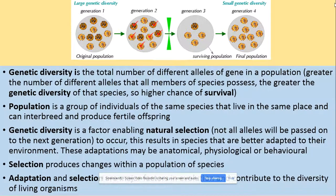Population is a group of individuals of the same species that live in the same place and can interbreed to produce fertile offspring. Genetic diversity is a factor enabling natural selection — the fact that not all alleles will be passed on and seen in the next generation results in species that are better adapted to the environment.